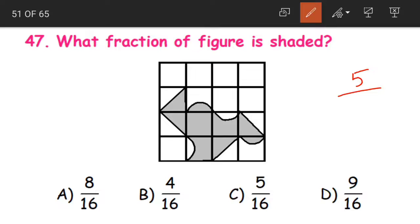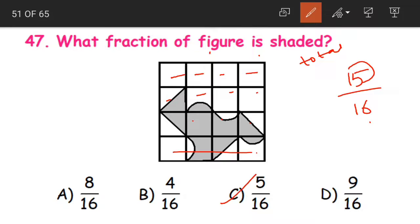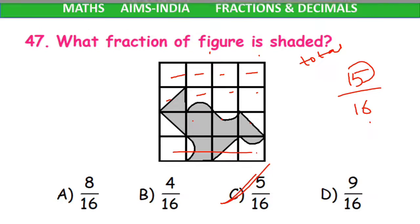The number of shaded blocks, that is five, divided by what will be our denominator? The denominator will be the total number of blocks. We are having 1, 2, 3, 4, 5, 6, 7, 8, 9, 10, 11, 12... 16. In total we are having 16 blocks. So the fraction of the figure that is shaded becomes 5 by 16, option C.